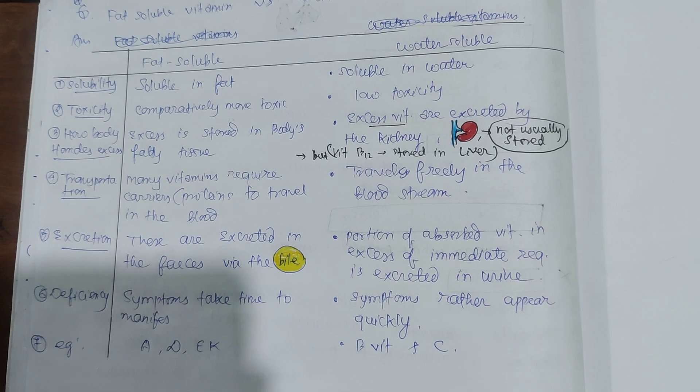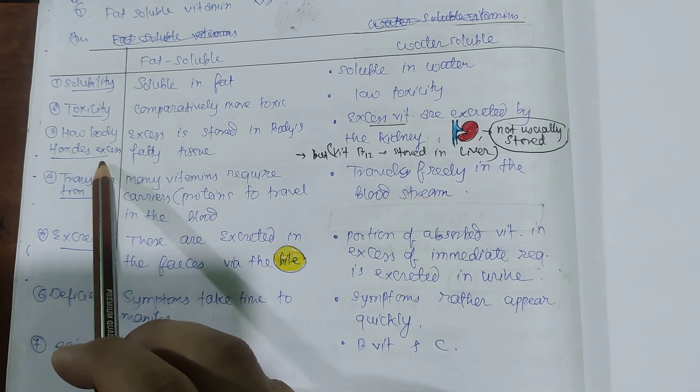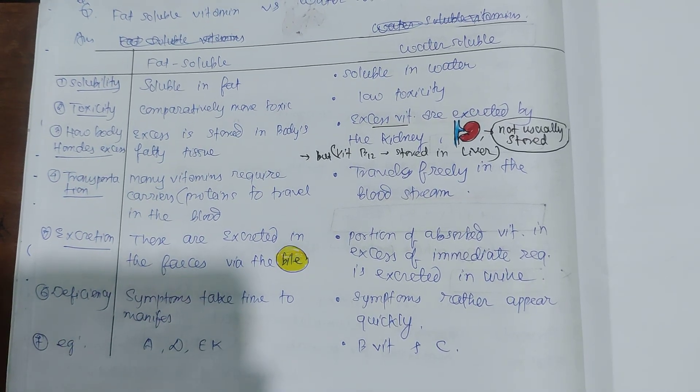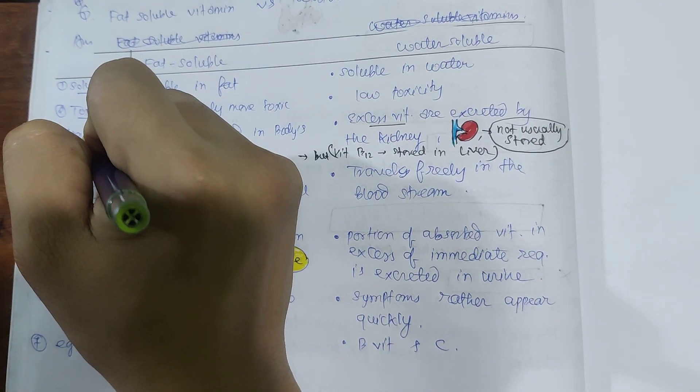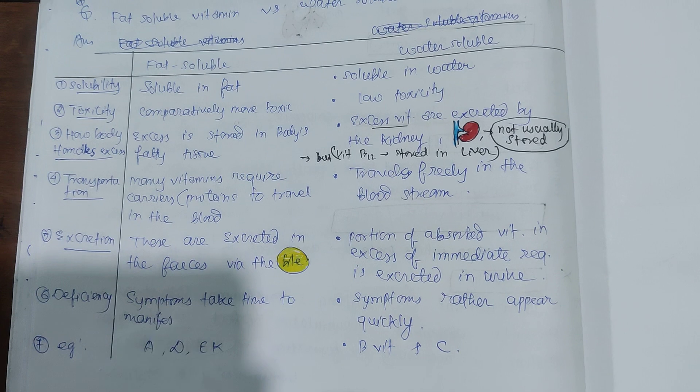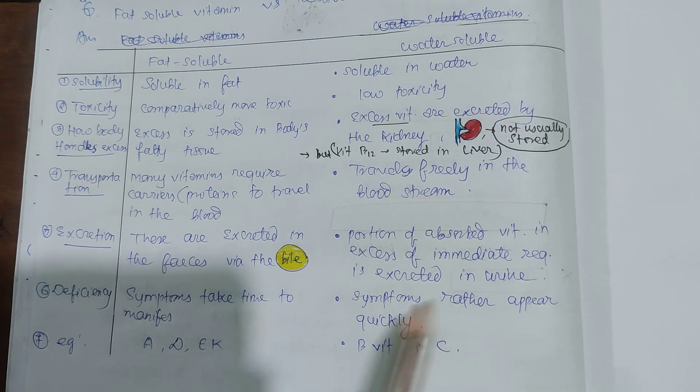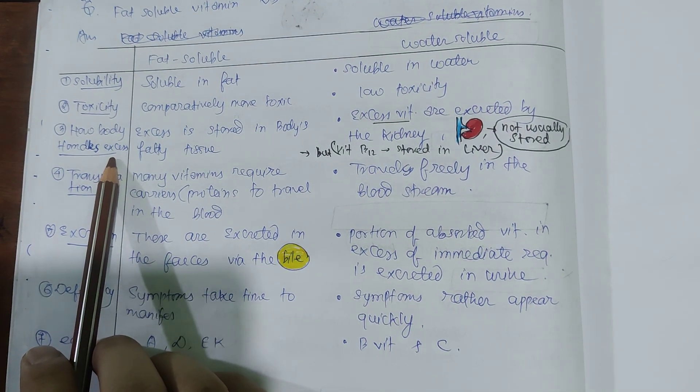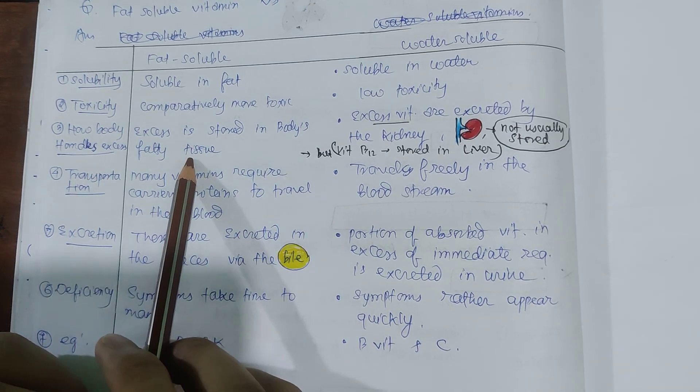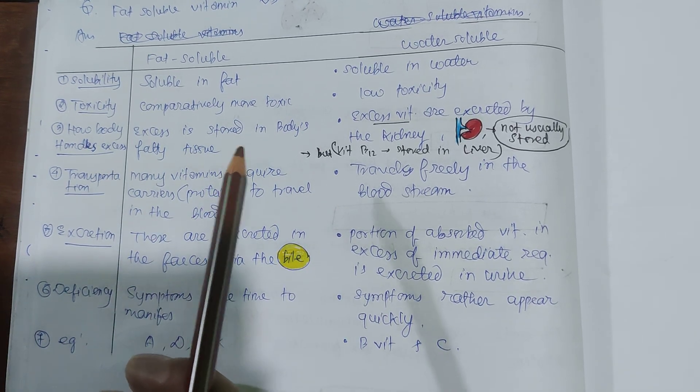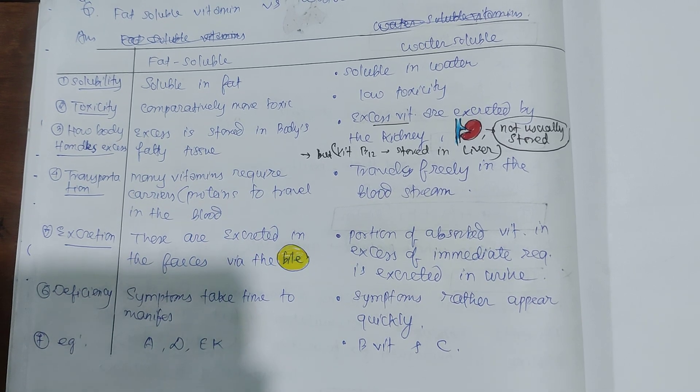How the body handles excess: For fat-soluble vitamins, excess is stored in the body's fatty tissue - they are not excreted, but actually stored in the body's fatty tissue.